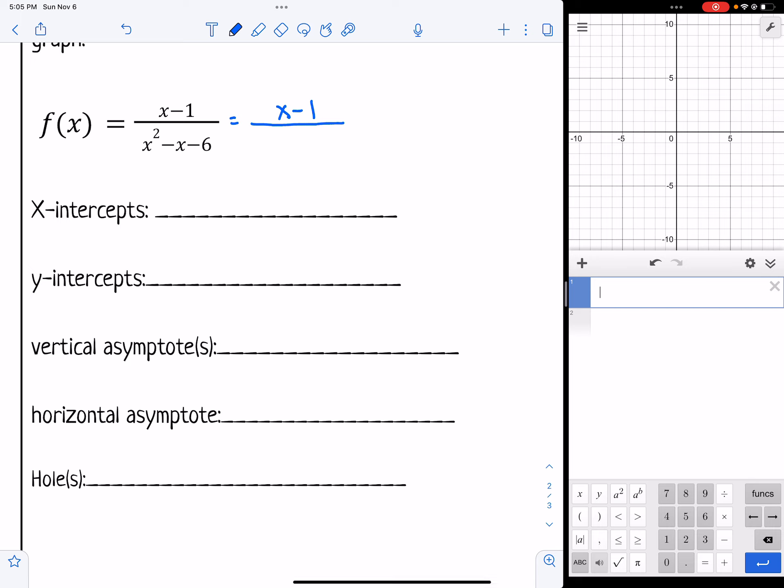So x minus 1 I can't factor any further. And for the trinomial at the bottom I've got to figure out what could multiply to give me negative 6 and add to give me negative 1. And that would be negative 3 and 2. So I'm going to put x minus 3, x plus 2 are the factors for the denominator. Now I see that no factors cancel out. So I'm going to go ahead and write no holes in my graph.